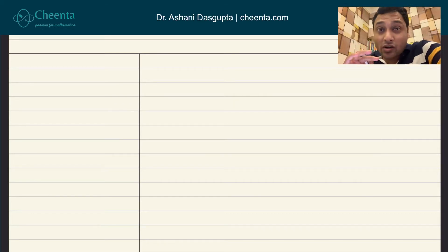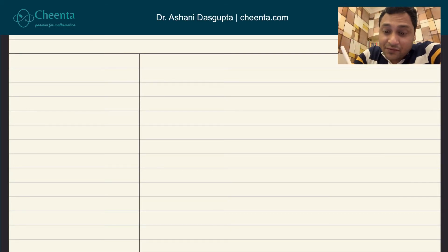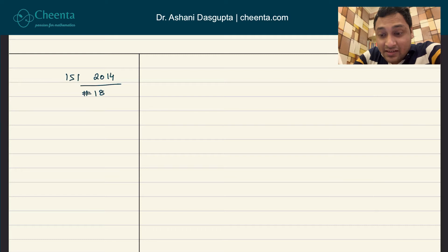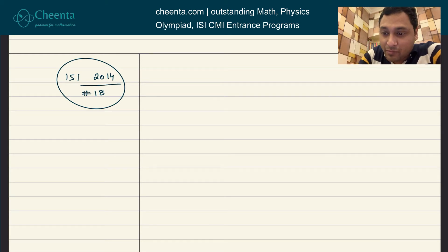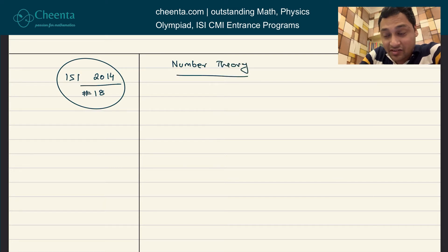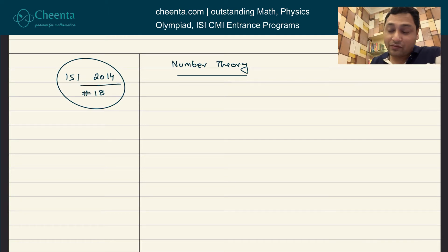Today we will work on a very exciting problem from number theory. This is from ISI Entrance 2014, problem number 18, but it may as well come in mathematical Olympiads, American math competitions and so on. Number theory is one of the most active areas of research in mathematics, so you can definitely check that out if you have not seen it before.